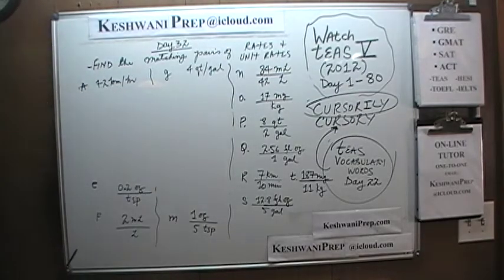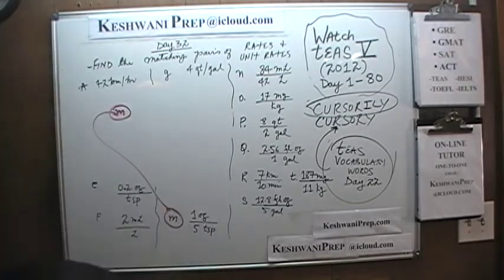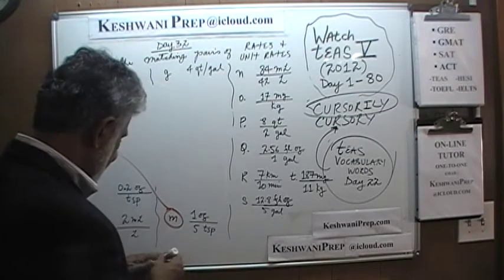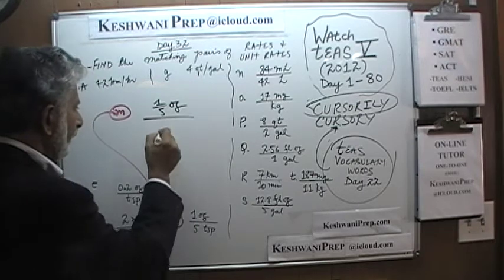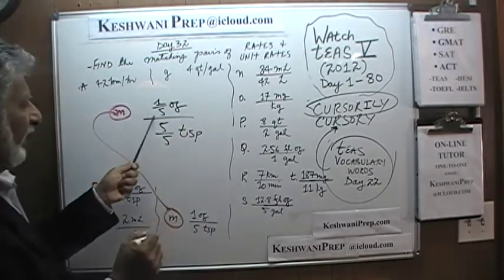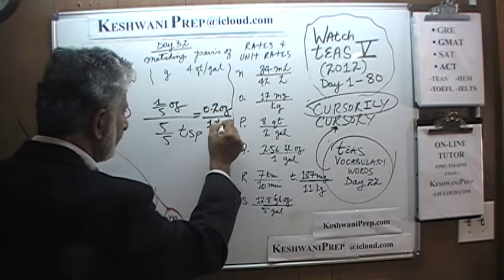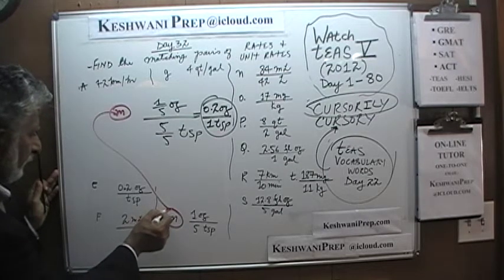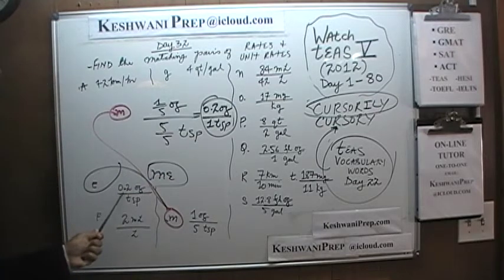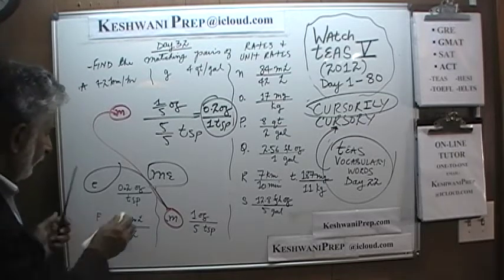Entry M says 1 ounce per 5 teaspoons — that is per 5 teaspoons, not per one teaspoon, so it is not a unit rate. We divide top and bottom by 5. The top becomes 1 ÷ 5 = 0.2 ounce, and the bottom becomes 5 ÷ 5 = 1 teaspoon. So 0.2 ounce per teaspoon. That matches entry E — 0.2 ounce per teaspoon. M matches E. E is the unit rate, M is the rate. We can get rid of that pair.